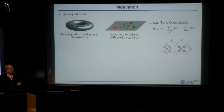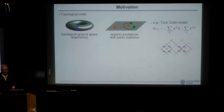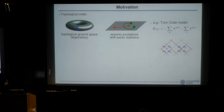The toric code model has two types of terms: an X term acting on plaquettes and a Z term acting around vertices. The Z term enforces that all configurations in the system are closed loops — so the ground space consists of closed loops on the lattice, with spins sitting on edges. The X term ensures that all loops appear with the same weight, so the ground state is a superposition of all loop patterns.